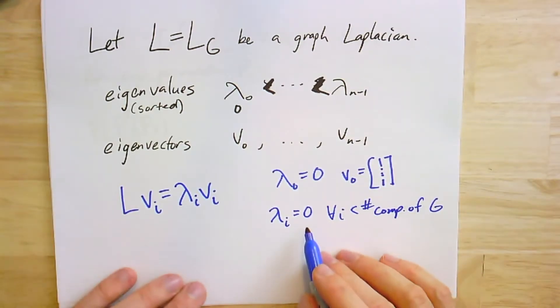What about λ₁? Well, if the graph is not connected, λ₁ will also be zero. So λᵢ will equal zero for all i less than the number of connected components of G. You can come up with several different bases. One simple thing to do is let the eigenvector be constant on just one component at a time, and you'll get a different eigenvector for each of the components.